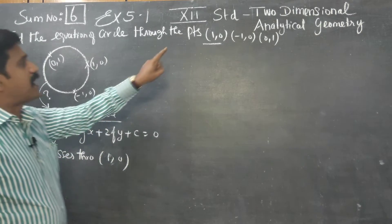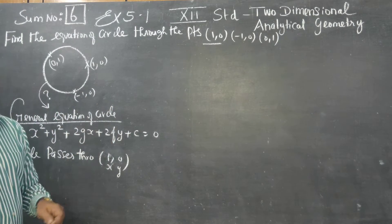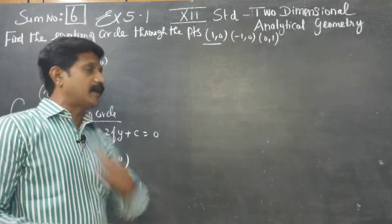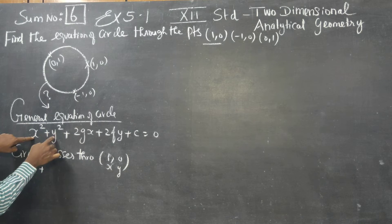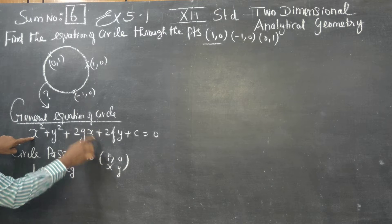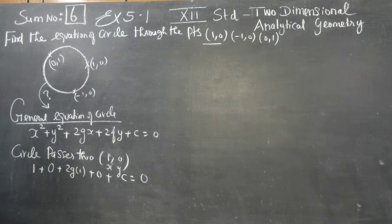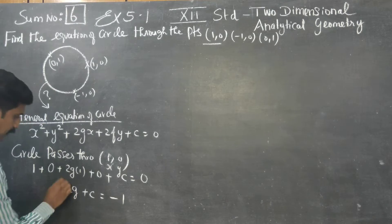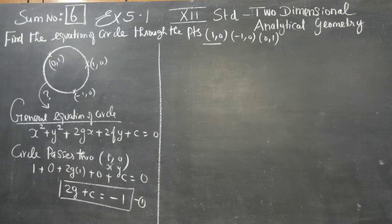The circle passes through (1,0). Substituting x = 1 and y = 0 into the general equation, we get: 1 squared plus 0 squared plus 2g(1) plus 2f(0) plus c equals 0, giving us 2g plus c equals minus 1. This is equation number 1.